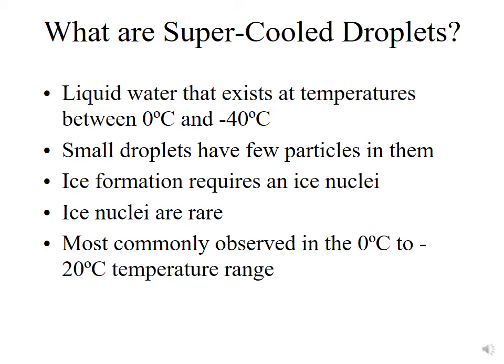Supercooled droplets are most commonly observed in clouds with temperatures between 0 and minus 20 degrees Celsius. As you get below minus 20, many particles in the atmosphere will start to act as ice nuclei, because you don't need a great match to the lattice structure of ice for particles to start acting as ice nuclei as temperatures get colder and colder.